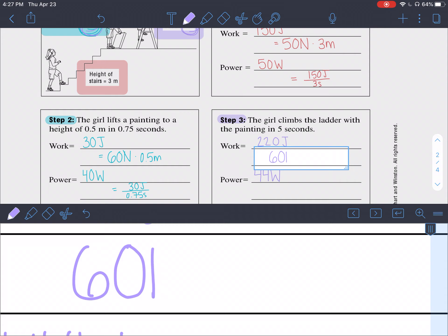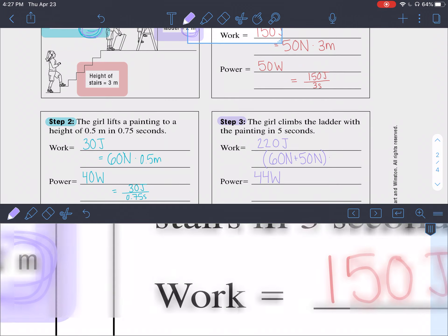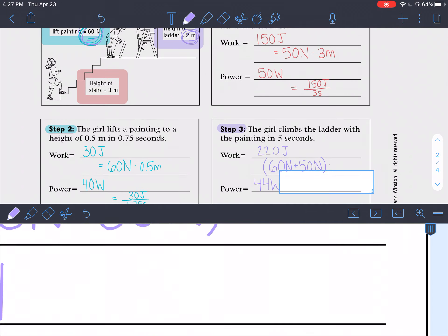So 60 newtons plus 50 newtons, and multiply that by the distance that she lifted the painting which was two meters. That's how we get the 220 joules. And last but not least 44 watts. That was found by taking the 220 joules and dividing it by the time that it took her.